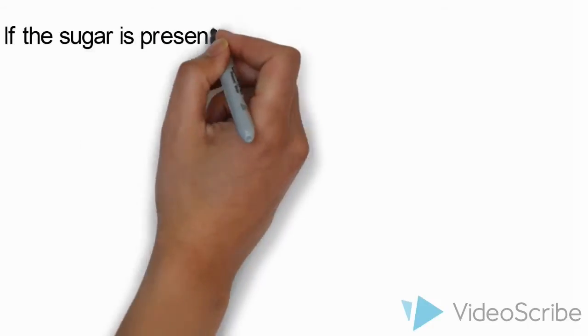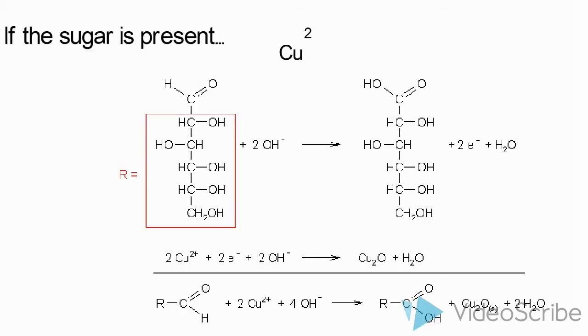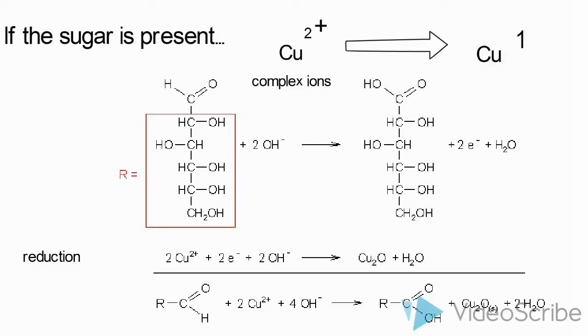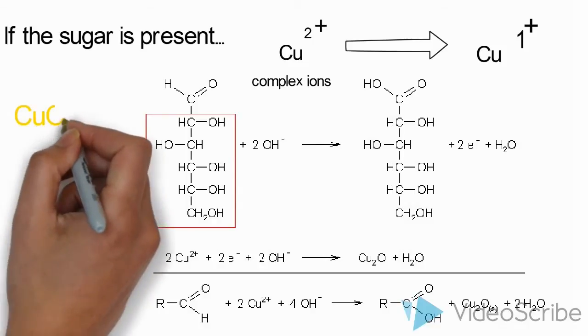If the sugar is present, Cu2+ ions from the bis-tartrate cuprate complex are reduced to Cu1+ ions, which react with hydroxide ions forming yellow precipitate of copper 1 hydroxide.